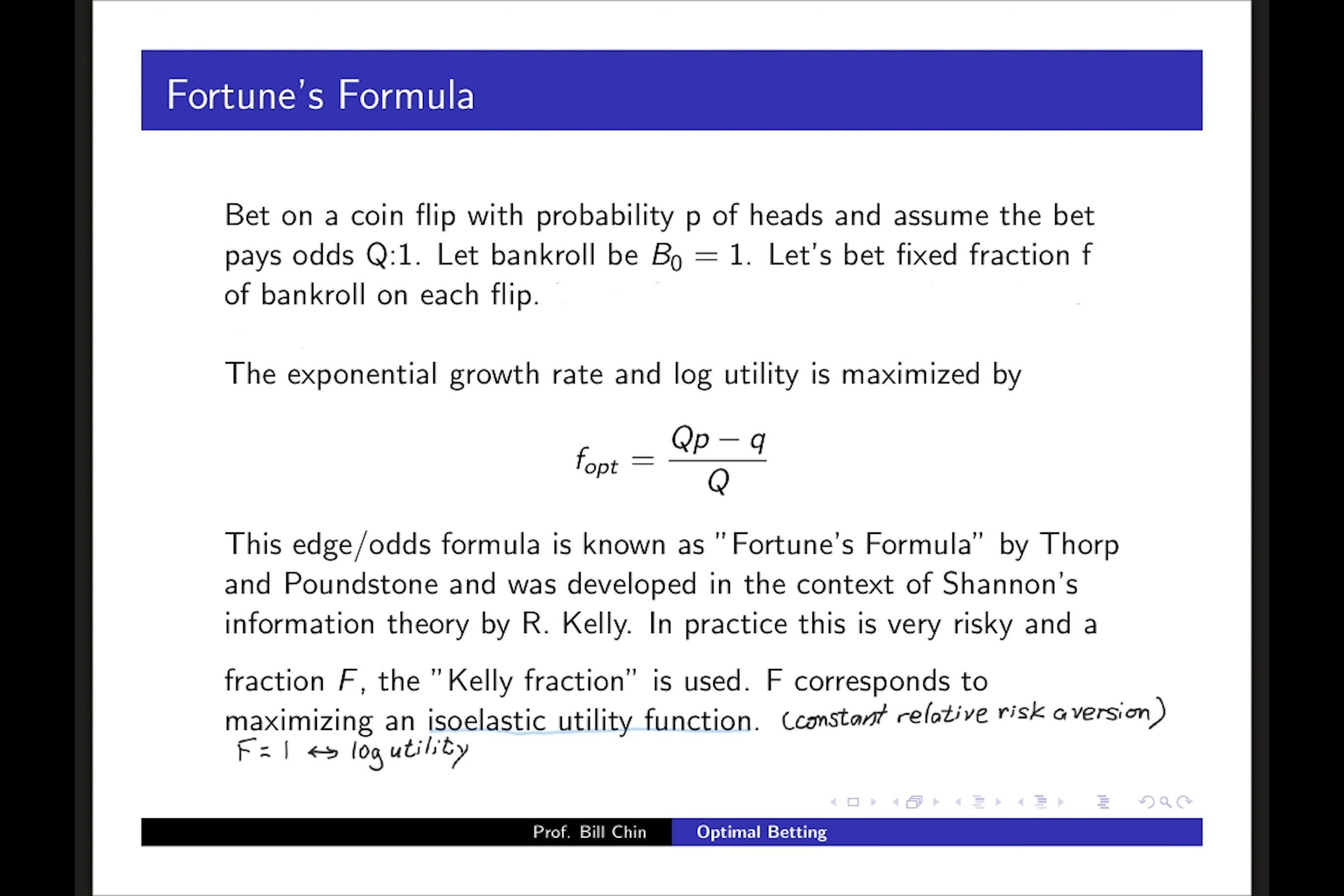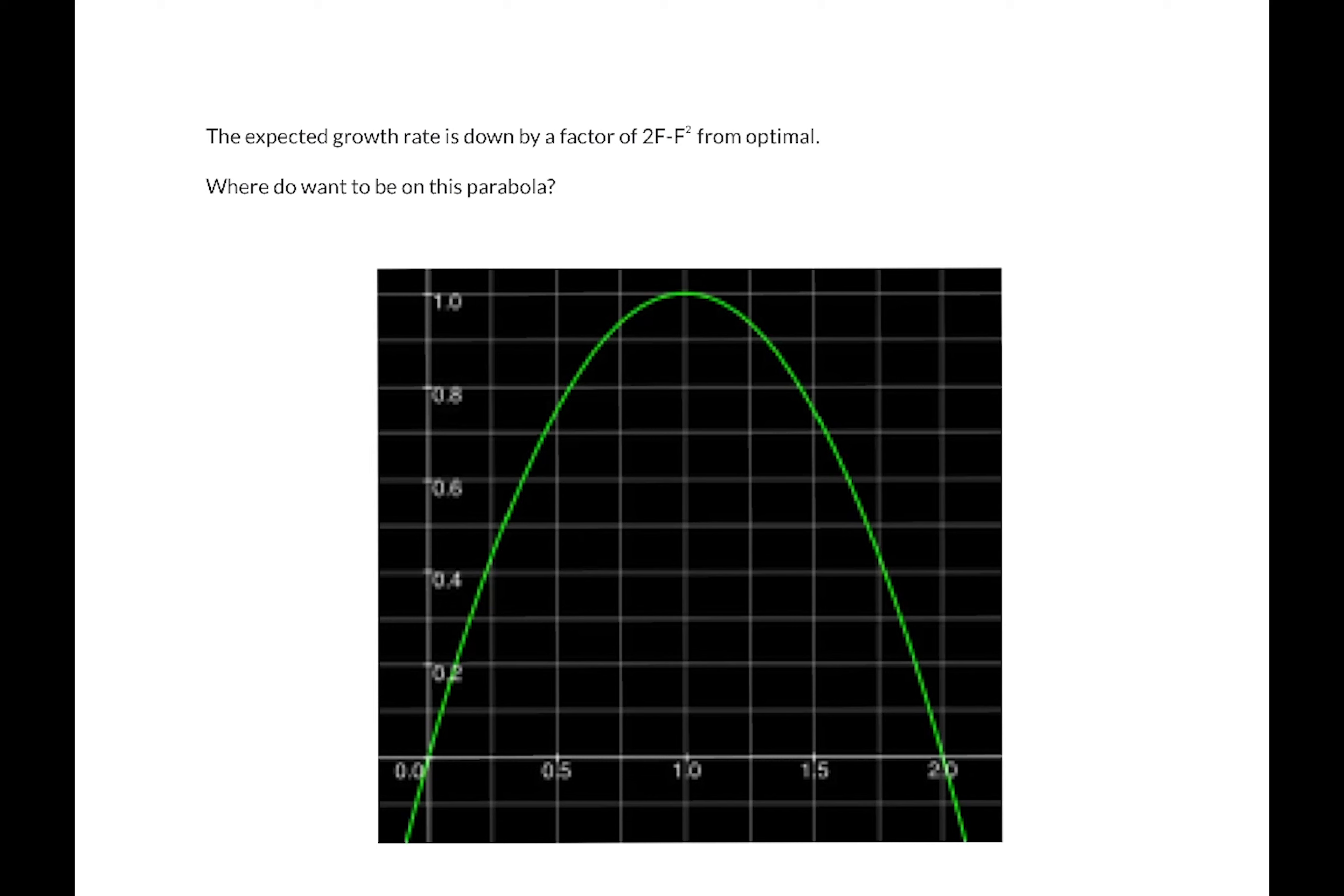Here's how it works: the expected growth rate is down by a factor of 2f - f² from optimal. So the question is really where do you want to be on this parabola. We have at f = 1 the optimal bet, and then if f is greater than 1 your growth rate decreases and it's the same as what you can get at f less than 1 with less risk. At f = 2, by the time you get to f = 2, your growth rate is zero. This explains why you should never, never over bet. Most professional gamblers shoot for something in the range of a third to a half Kelly.